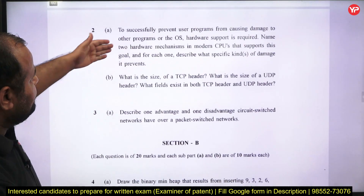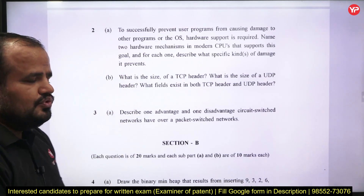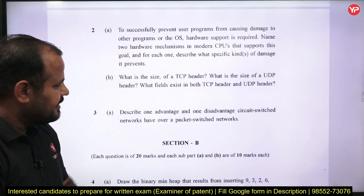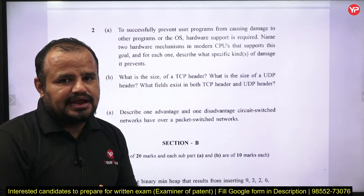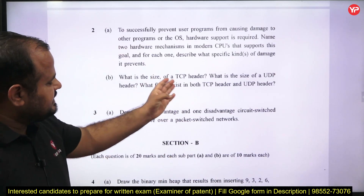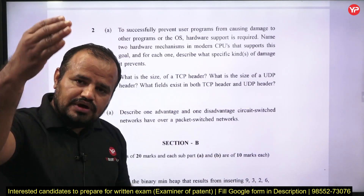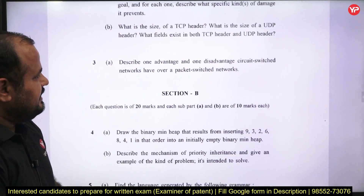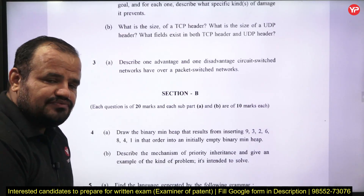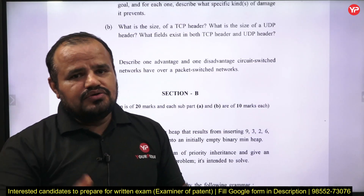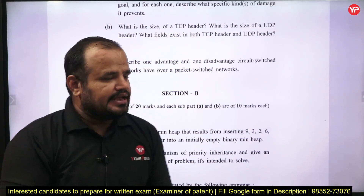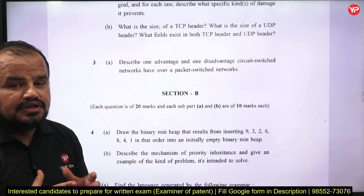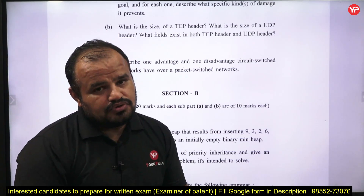Next is an Operating System problem, followed by a question on the size of the TCP header — you need to draw the TCP header diagram. You also need to explain the size and format of the UDP header, and identify which fields exist in both TCP and UDP headers. Another question asks you to describe one advantage and one disadvantage of circuit switching over packet switching — covering dedicated paths, time differences, and when each is preferred.